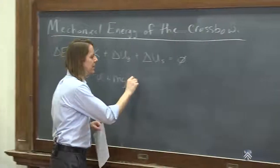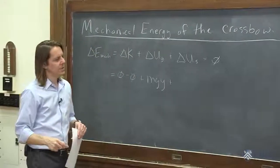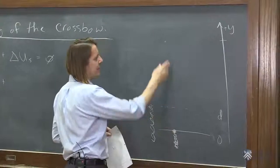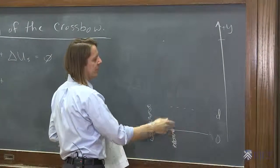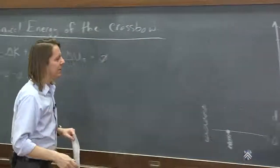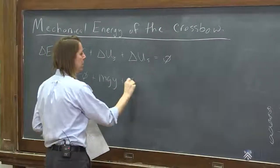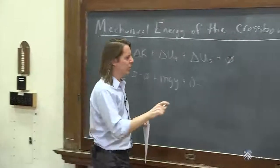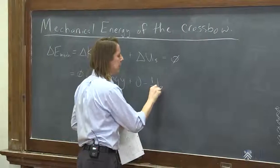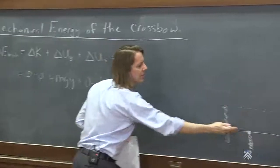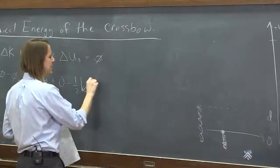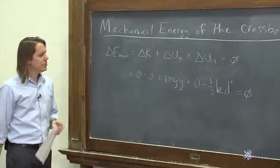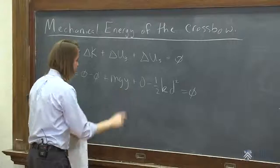And then the spring potential energy. So that would be final minus initial. So the final spring energy is zero minus, and then the initial is 1 half k and the deflection of the spring squared. So 1 half k, and then we did the spring by d, d squared equals zero. So you should be able to use that information to get y, right?